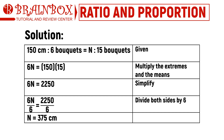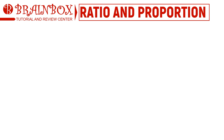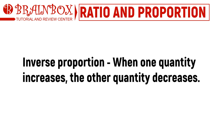Thus, the florist needs 375 centimeters of ribbon to arrange 15 bouquets of roses. Notice that as the number of bouquets increases, the length of ribbon needed also increases. Whereas in an inverse proportion, one quantity increases as the other decreases.